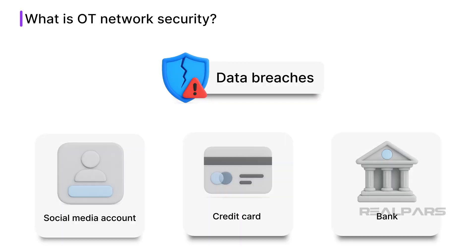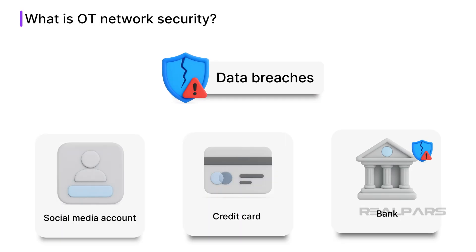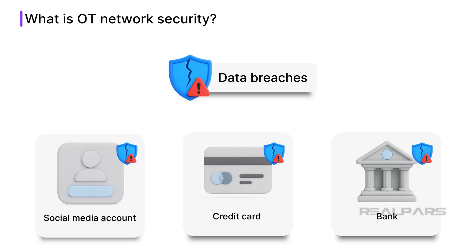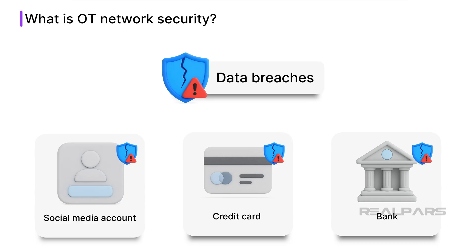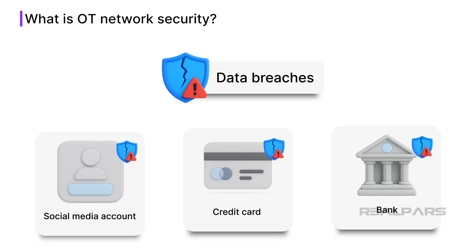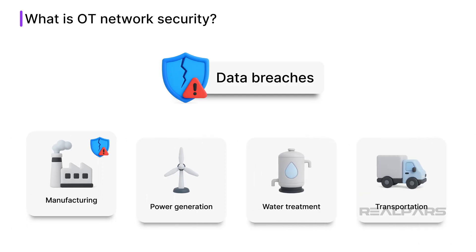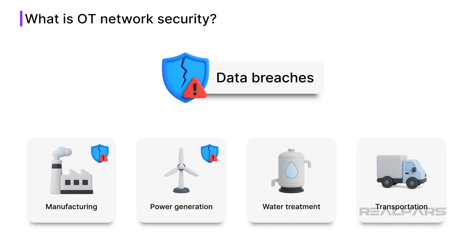Chances are you have personally been affected by data breaches at your bank, credit card company, or social media account. These are all examples of breaches in cybersecurity. Just as cybersecurity breaches affect individuals, industrial operations such as manufacturing, power generation, water treatment, and transportation are also at risk of targeted attacks.